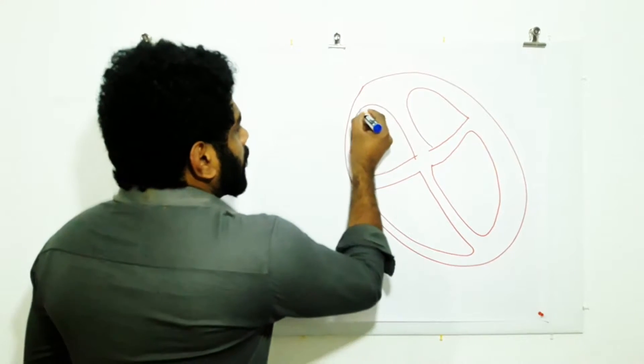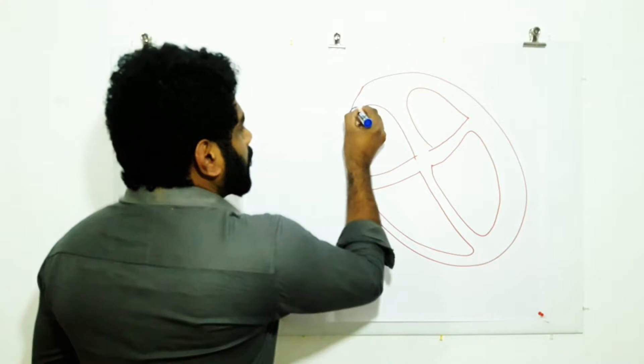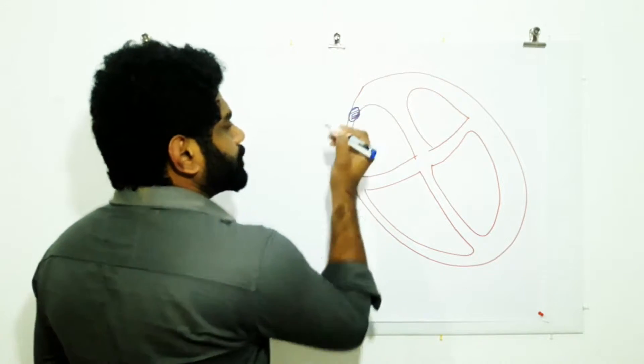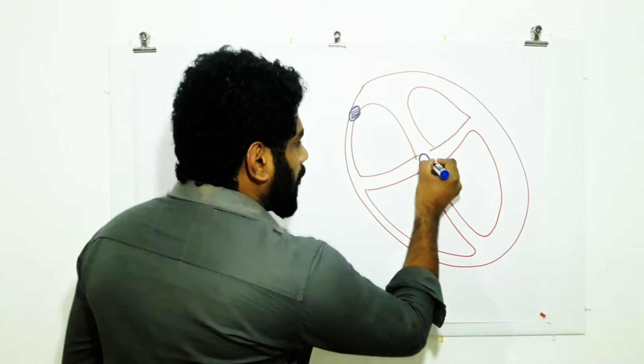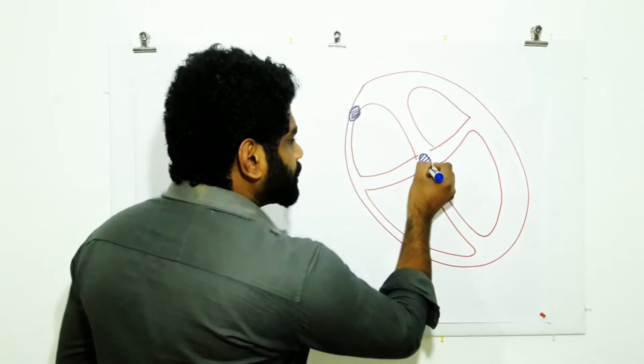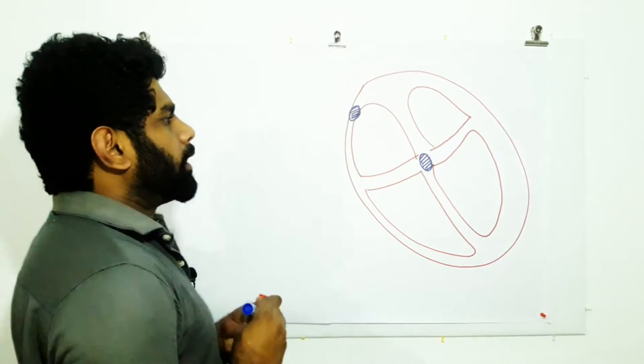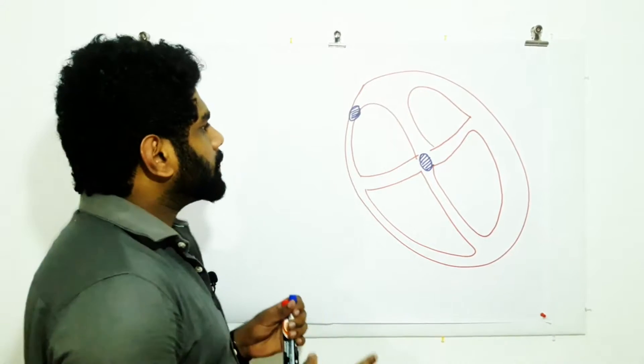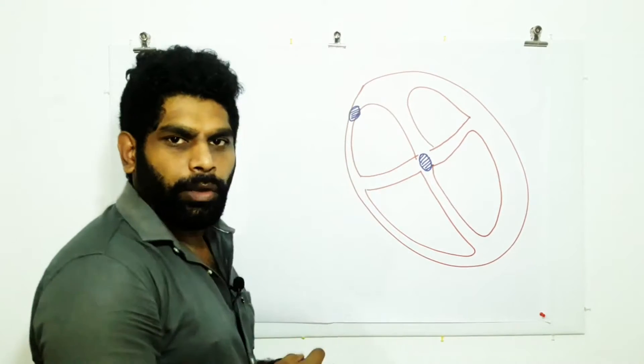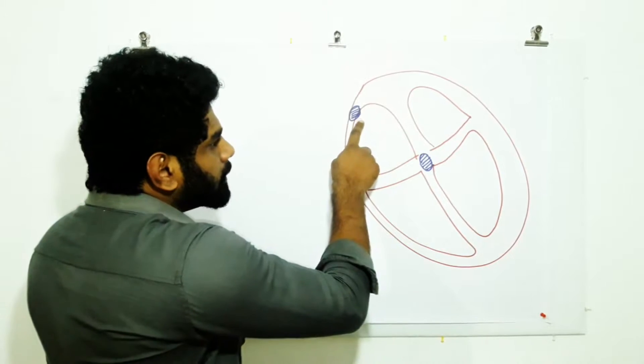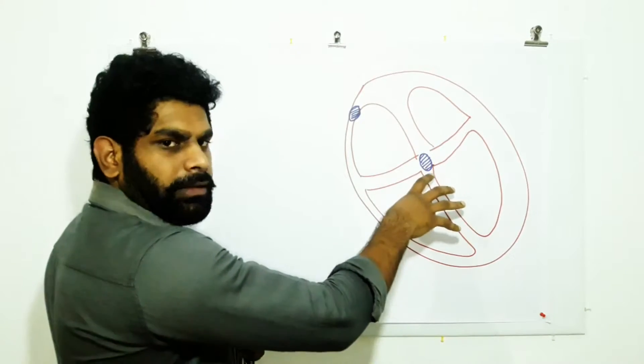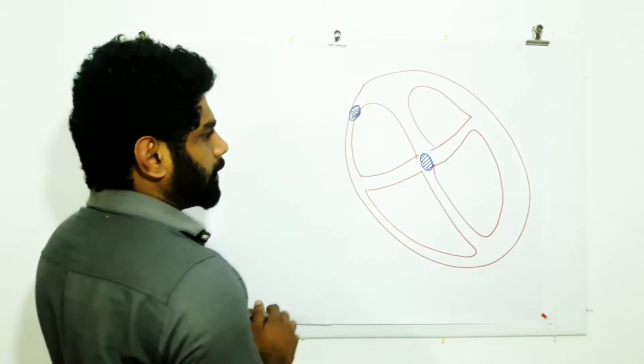Here we have our SA node and here we have our AV node. These electrical impulses are produced by the SA node. These impulses travel towards the ventricle through the wall of the atria.